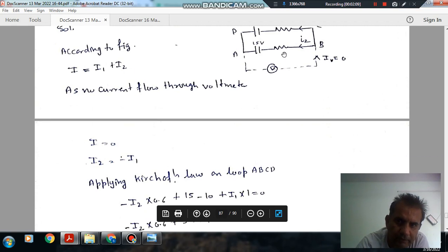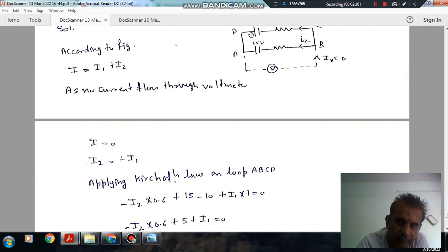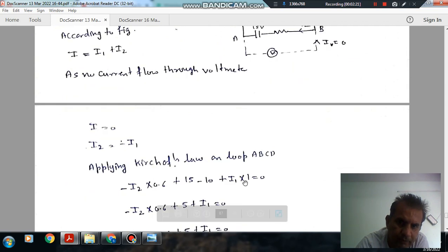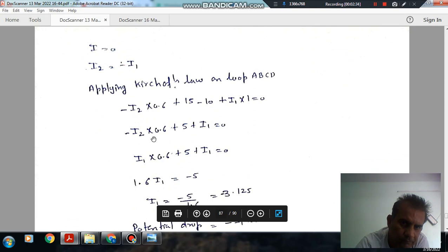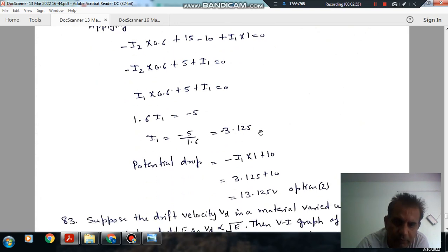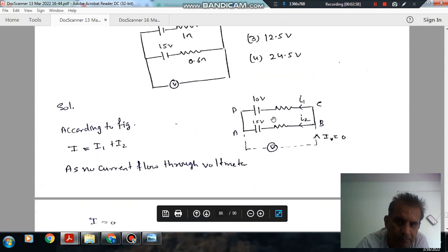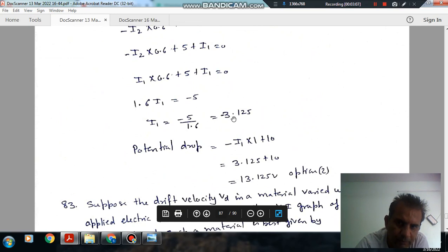So, this will be equal to minus I2 into 0.6, and plus 15, and then it will be minus 10 and plus I1 into 1. So, it will be minus I2 into 0.6 plus I1. So, it will be I1 into 0.6 plus 5 plus I1. Or, 1.6 I1 is equal to minus 5. So, I1 is equal to minus 5 divided by 1.6. The potential drop is I1. I1 is minus 3.125.